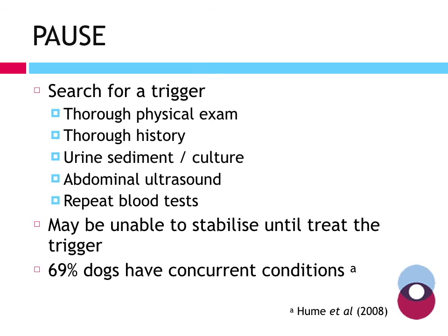Once we've stabilised the DKA patient, we need to step back and work out why this happened. We're looking for a specific trigger beyond just being a newly diagnosed untreated diabetic. This involves a thorough physical exam, a close history from the owner, looking for sources of infection, urinalysis and possibly culture, abdominal ultrasound for pancreatitis or gastroenteritis, and further blood tests. About two thirds of dogs will have concurrent conditions making their diabetic control more difficult. We may struggle to fully settle the patient until we treat the underlying trigger.